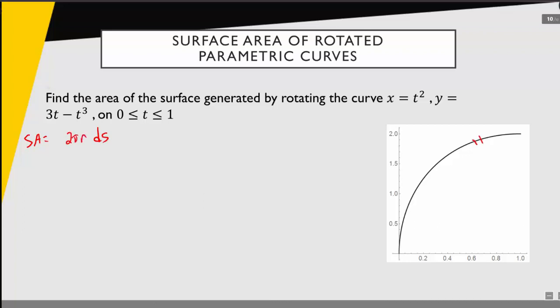And then we added up all those little pieces, and that's our general formula: the integral of 2πr ds. And for Cartesian functions we had to decide which expression we wanted to use for ds and then match our radius value with that associated variable.